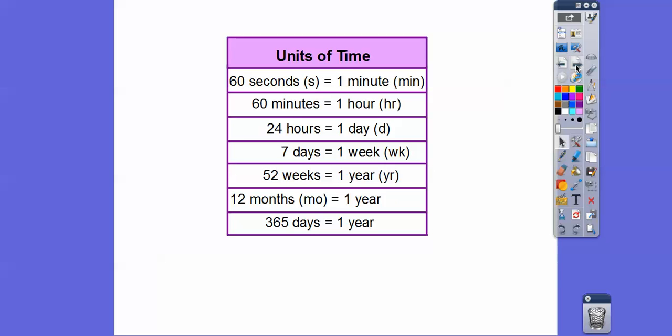We're going to be using this conversion table. 60 seconds is 1 minute, 60 minutes is an hour, 24 hours equals a day, 7 days equals a week, 52 weeks in a year, 12 months in a year, and 365 days in one year, unless it's a leap year. This year for us it's a leap year, so 366 days, but typically 365 days in a year.